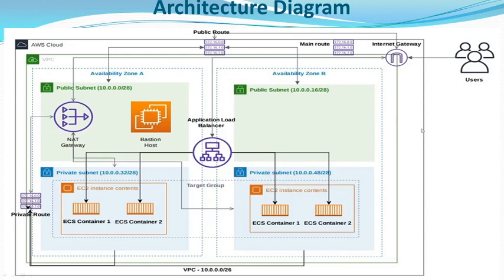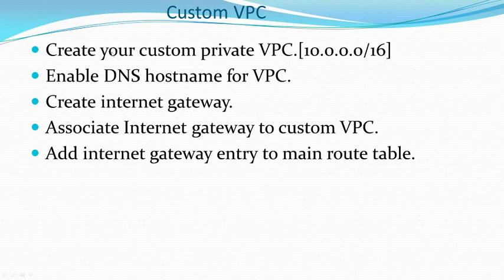Let's see the agenda for today's session. We are going to create a custom VPC with a CIDR block, enable the DNS hostname for our VPC, create an internet gateway, associate the internet gateway to our custom VPC, and add an internet gateway entry to our main route table. This main route table gets automatically created whenever we create a new custom VPC. So let's go ahead with the hands-on.